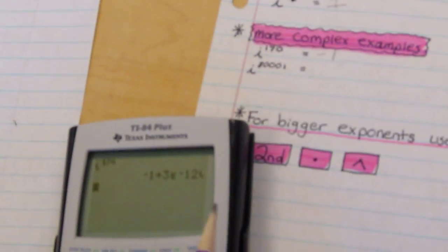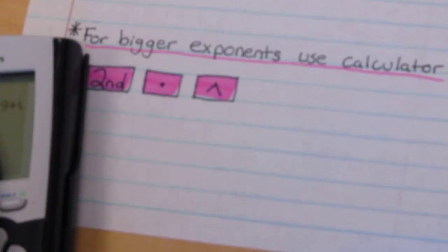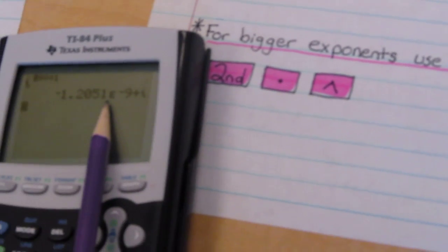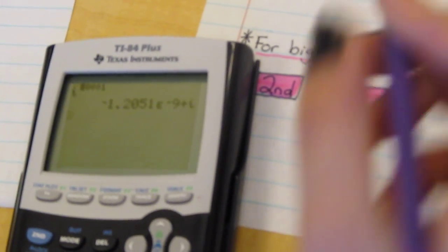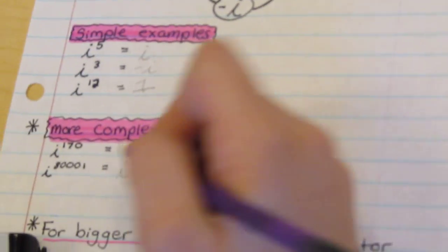Now for this one it is 80,001. So we're going to go second, decimal, up, 80,001 equals. Now this looks weird too. So we find the e, we get whatever is on the directly right and left and all that's left is i. So the answer to this one is i.